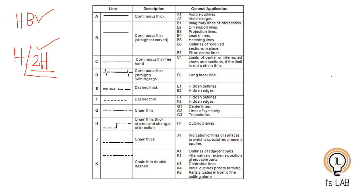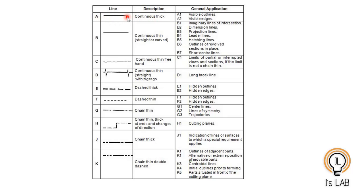Now we will take the first case, Line A. Type A is a continuous thick line, and it is used to represent visible outlines and visible edges. When you take a cube or a pyramid you will have visible edges and hidden edges. If you are looking from the front, the features on the back side will be hidden, so whatever is visible should be represented using a continuous thick line — visible outlines and visible edges.